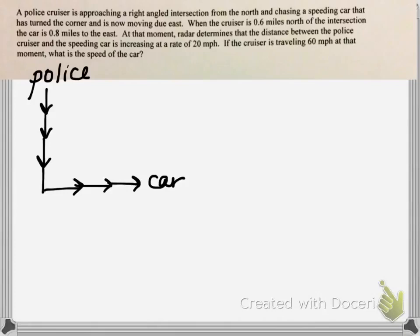When the cruiser is 0.6 miles north of the intersection, the car is 0.8 miles to the east. And at that moment, radar determines that the distance between the police cruiser and the speeding car is increasing at a rate of 20 miles an hour. On the diagram, the distance between the policeman and the car at any given time is represented by the hypotenuse of a right triangle.